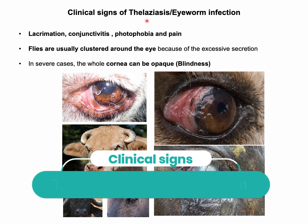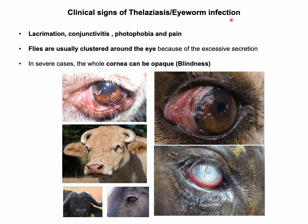Major clinical signs of telagiosis or eyeworm infection include lacrimation, conjunctivitis, photophobia, and painful eyes with excessive lacrimation. The infection can also be recognized by observing aggregation of large numbers of flies around the eyes. In severe cases, corneal opacity leading to blindness can be seen. Observation of gross parasites in the eyes has diagnostic value.